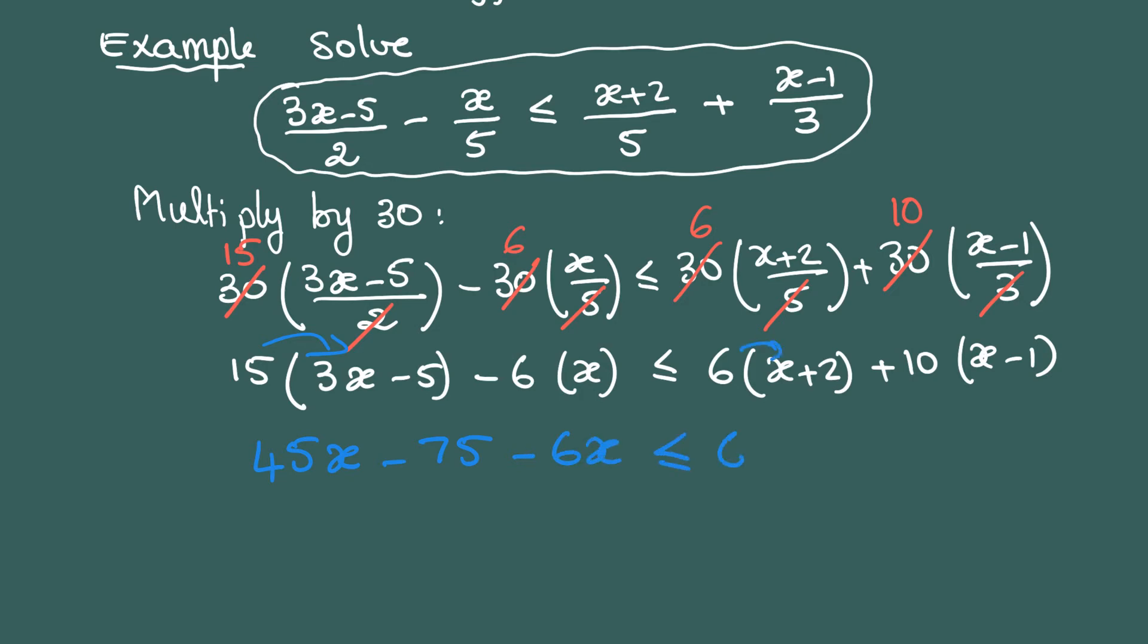Next we will move all the x's to the left hand side. We'll achieve that by a shortcut. Basically, 45x - 6x are already on the left hand side.